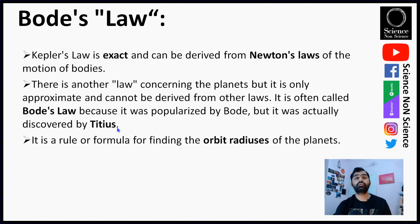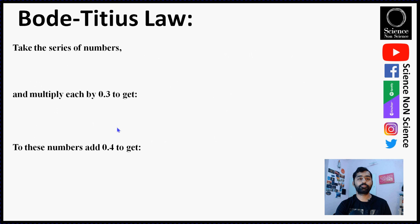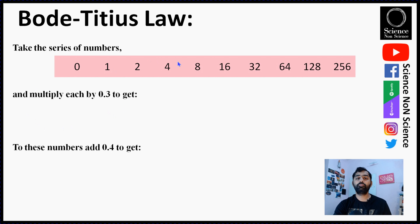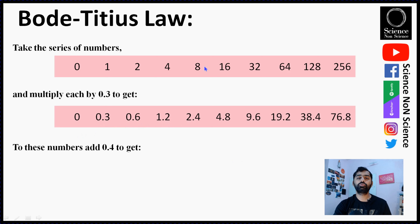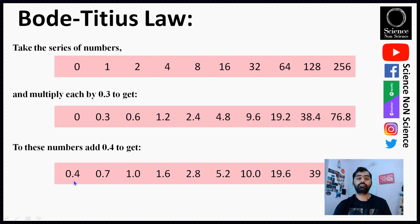To use this law, you don't need any complex physics or math. Take the series of numbers: 0, 1, 2, 4, 8, 16, 32, 64, 128, 256 — doubling each time. Multiply each number by 0.3, giving 0, 0.3, 0.6, 1.2, and so on. Then add 0.4 to each result, giving: 0.4, 0.7, 1.0, 1.6, and so forth.